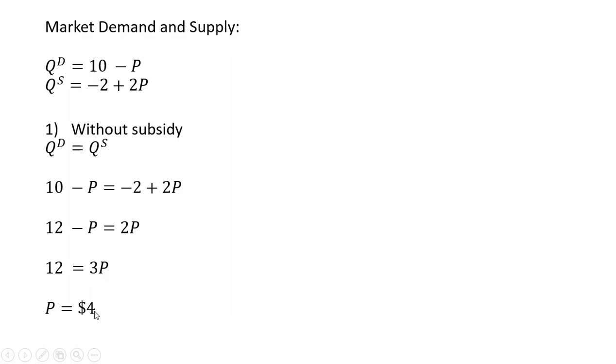Plugging this $4 back into either the demand or supply equation, we'll get an equilibrium quantity of 6. So 10 minus 4 is 6, or minus 2 plus 2 times 4 will also be 6.